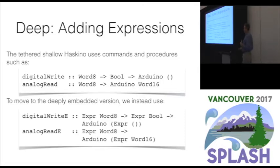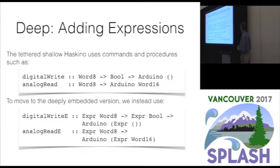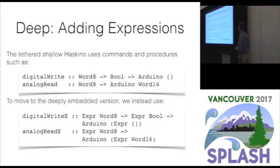So we move from the shallow embedding to a deep embedding. Basically, the shallow embeddings use standard Haskell types — an 8-bit integer and Booleans — and return values within the Arduino monad, so they're effectful. A write returns a unit; an analog read returns a 16-bit word. To go to the deeply embedded version, we lifted these standard Haskell types into an expression type, so we have expressions of Word8 and expressions of Boolean, and return expressions within the Arduino monad for the deep versions. The monad is the same for both shallow and deep, though it wouldn't have to be.